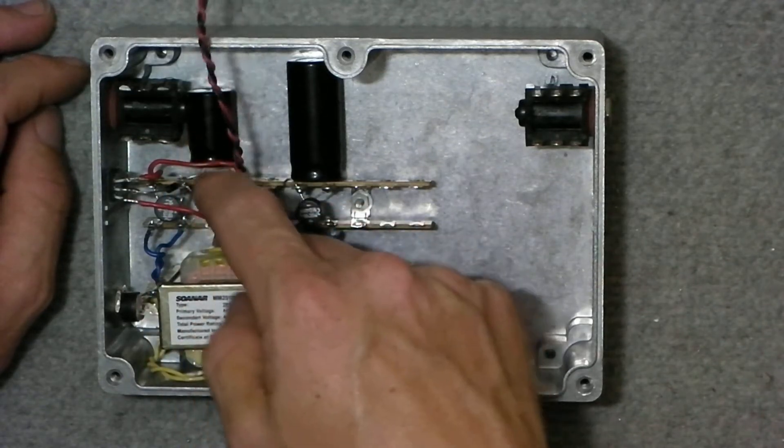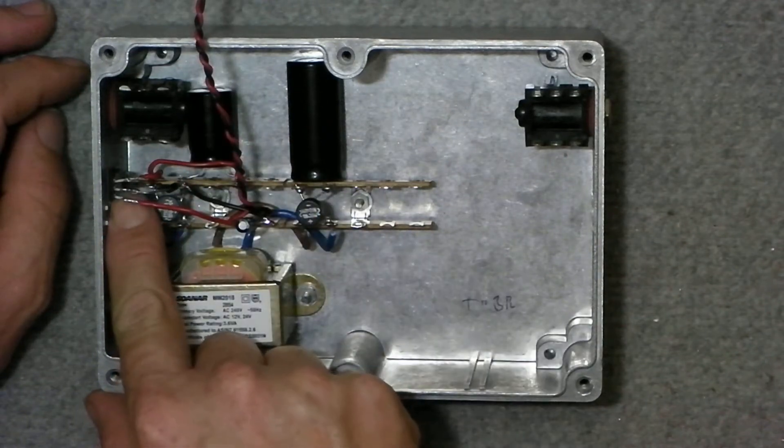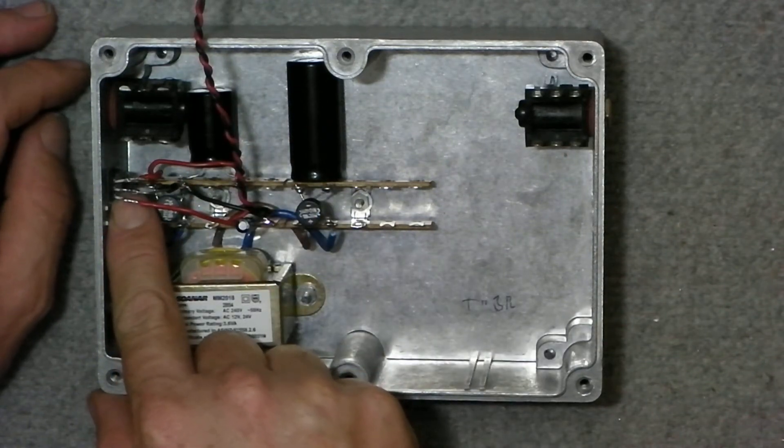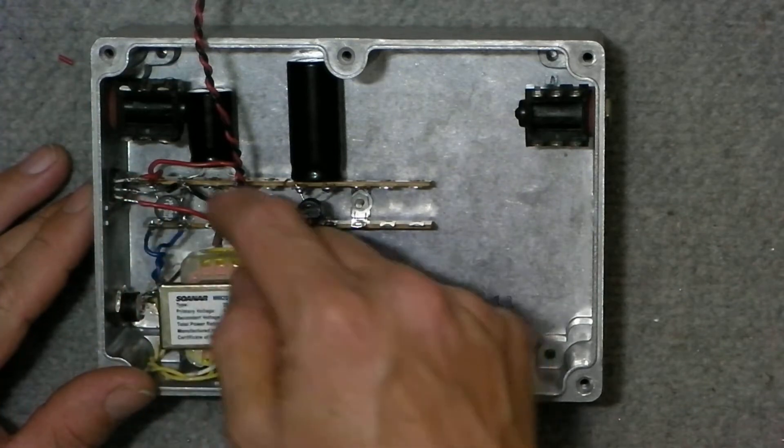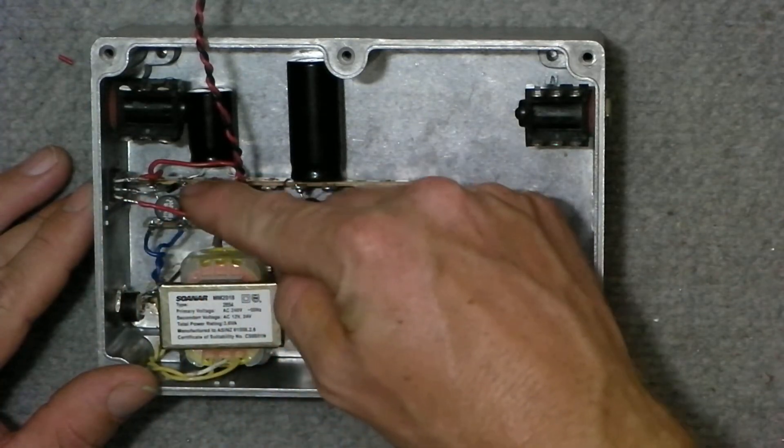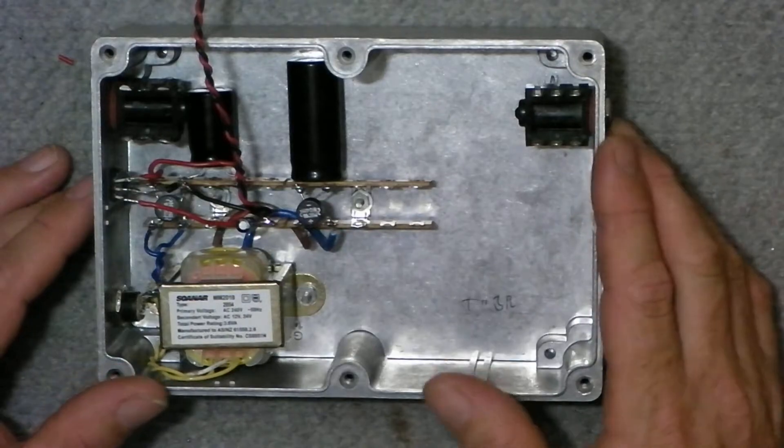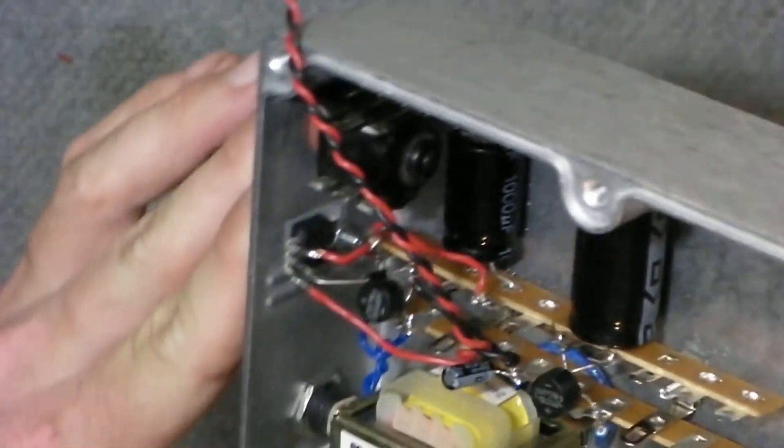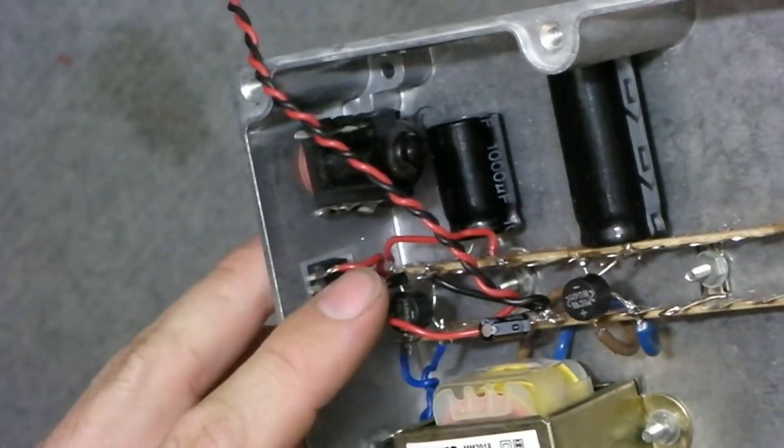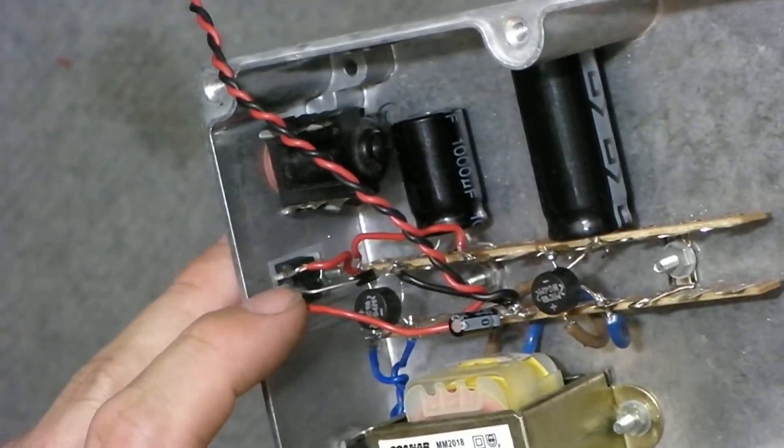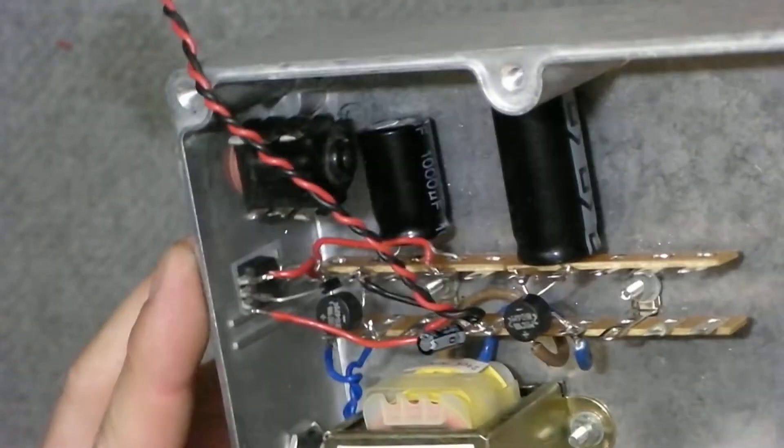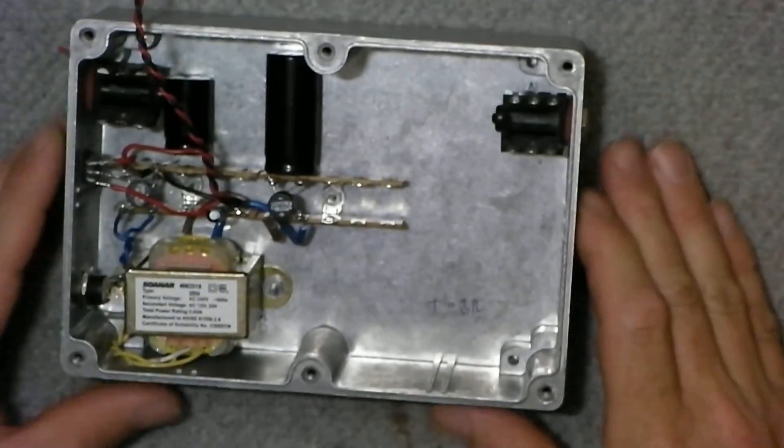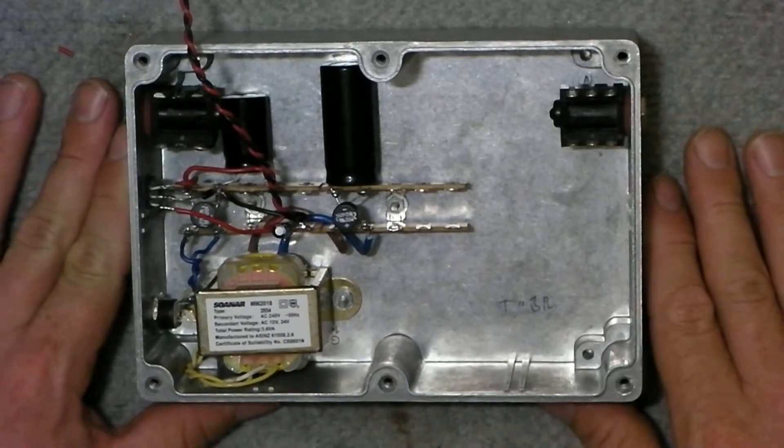And then it gets regulated down to 12.6 by this 7812, and I use a little power diode, I don't know whether you can see that there, off the reference pin on the regulator to ground, and that bumps it up to 0.6.